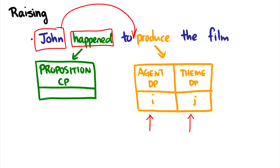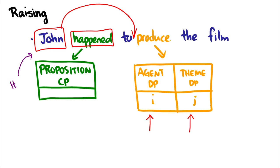Let's take a look at the theta grid for 'happened.' This is a very special theta grid because it doesn't have a theta role for a subject — there is nothing here. So John in this position is not getting any theta role from 'happened.' Instead, 'happened' just takes a proposition. We know this because we can stick an expletive in there, like 'it happened to be raining' or 'it happened to be a bad day.'